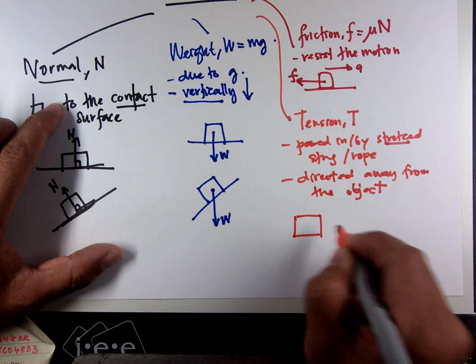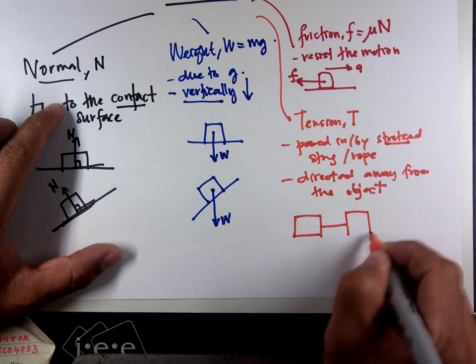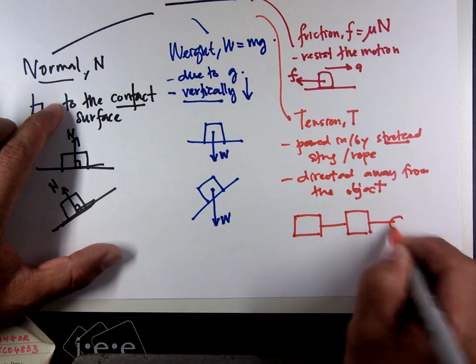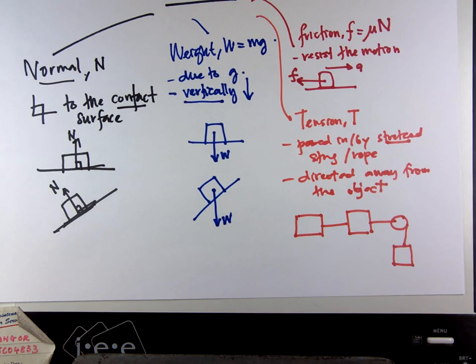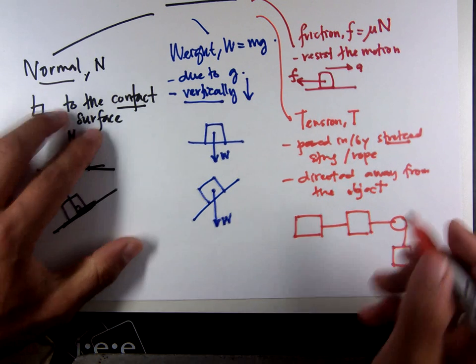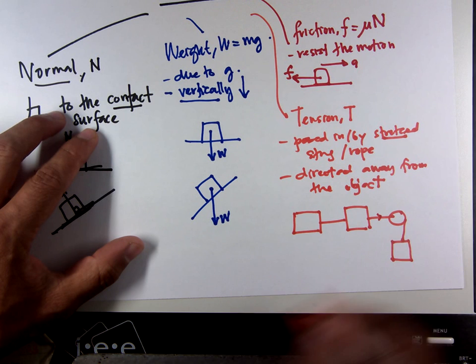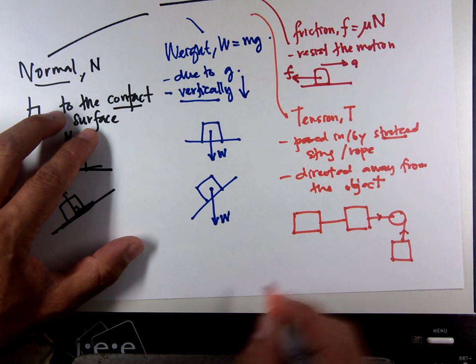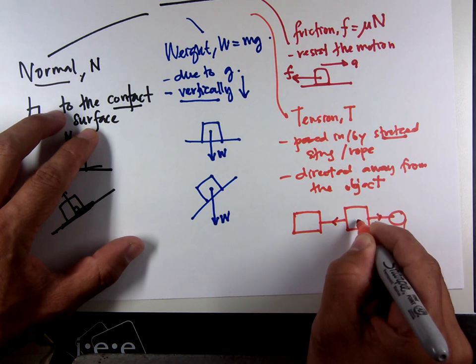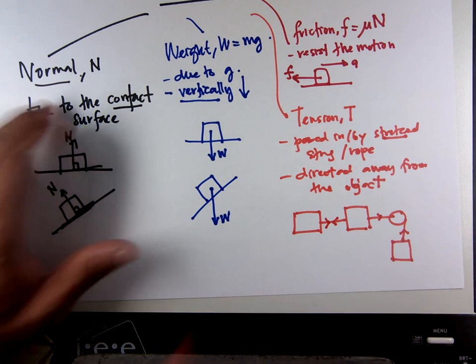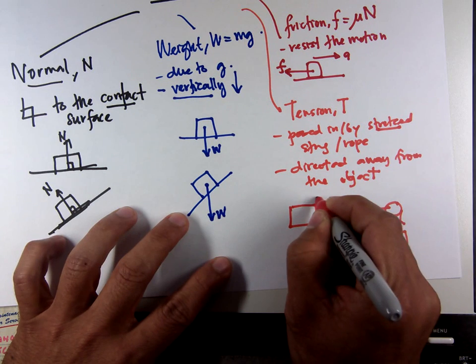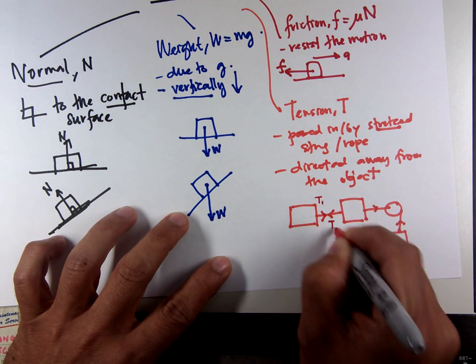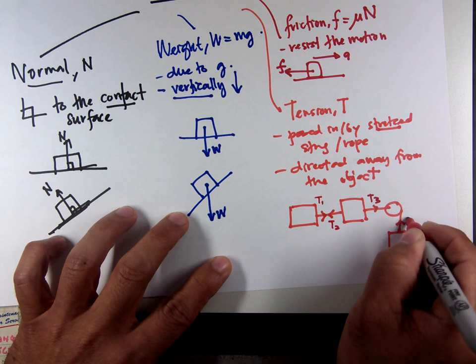Let's say we have three objects. This is a pulley. We are going to draw the tension. Tension is always directed away. For this object, directed away. This object, directed away. Directed away from this object. And this one directed away from the object. Now if I can label, let's say this is T1, T2, T3, T4.